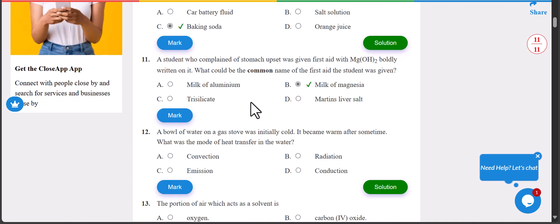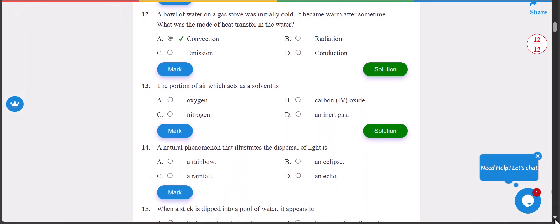Number 12: a bowl of water on the gas stove was initially cold, it became warm after some time. What was the mode of heat transfer in the water? The answer is A, that is convection. The answer is convection.